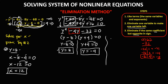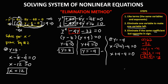For the other value, at y equals negative 4: x minus y minus 4 equals 0 becomes x minus negative 4 minus 4 equals 0. Negative and negative gives positive, so x plus 4 minus 4 equals 0, which simplifies to x equals 0.